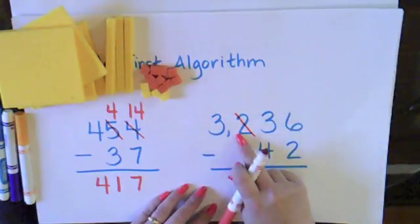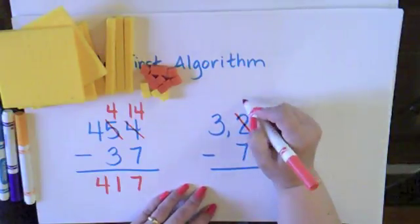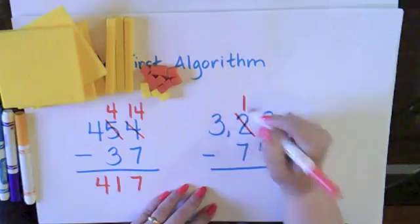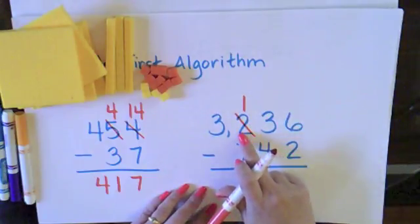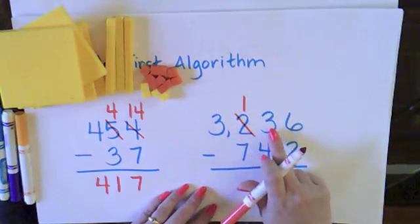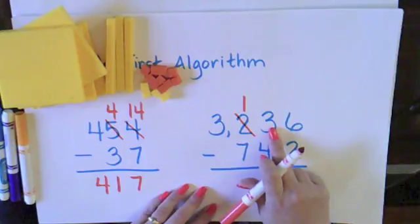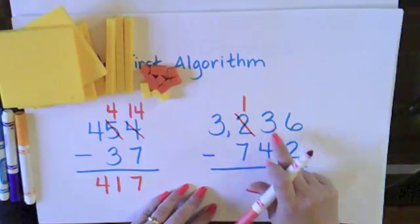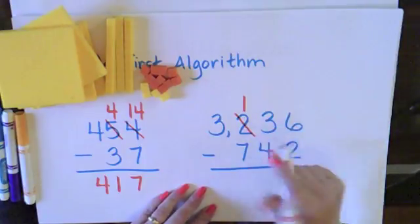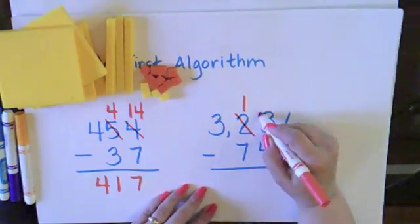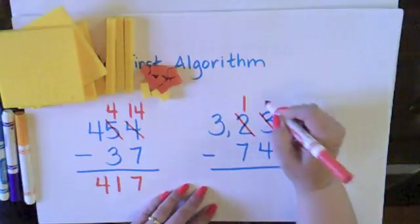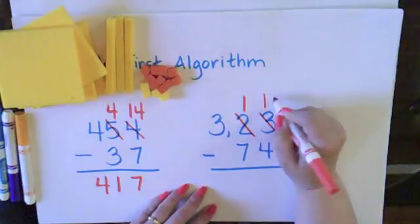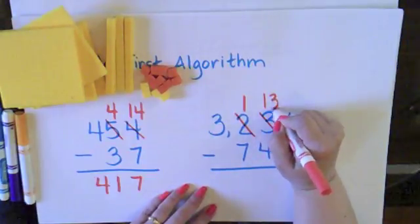So now instead of 2 100s, I'm only left with 1. And I'm going to take 1 of the 100 that I took and break it into 10 10s. So now I have 10 10s plus the 3 10s that were already there, and I now have 13 10s.